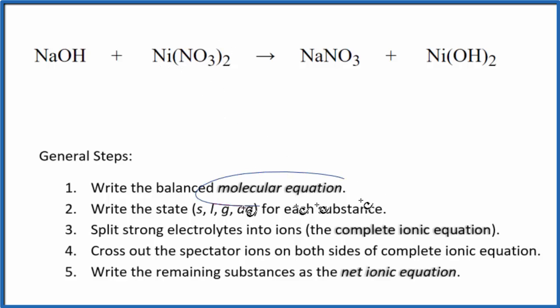First thing we need to do is balance the molecular equation. We can see that we have two nitrate ions here and only one here. So let's put a 2 in front of the sodium nitrate. Now I have two sodium atoms here and only one here.